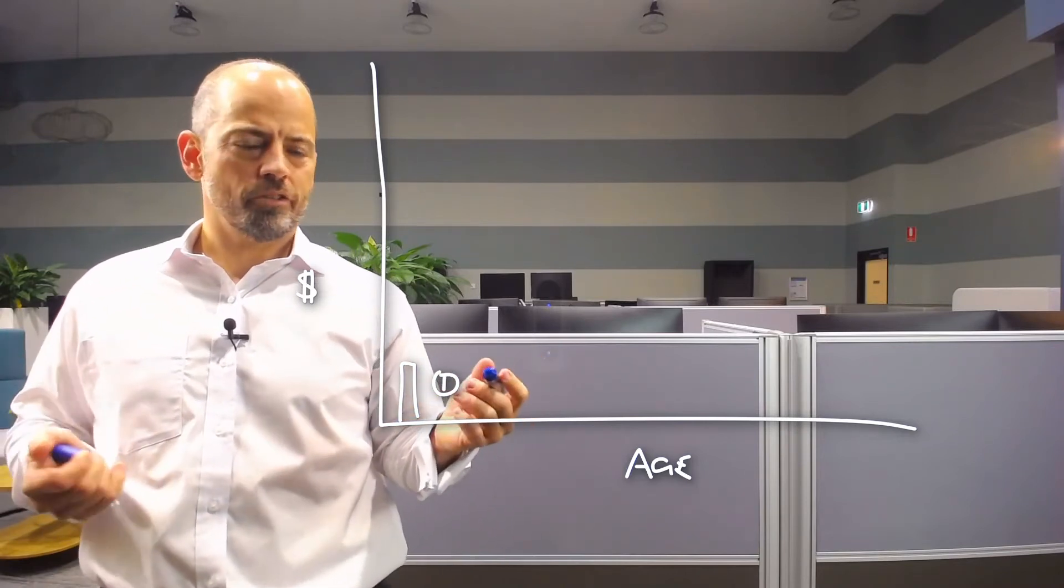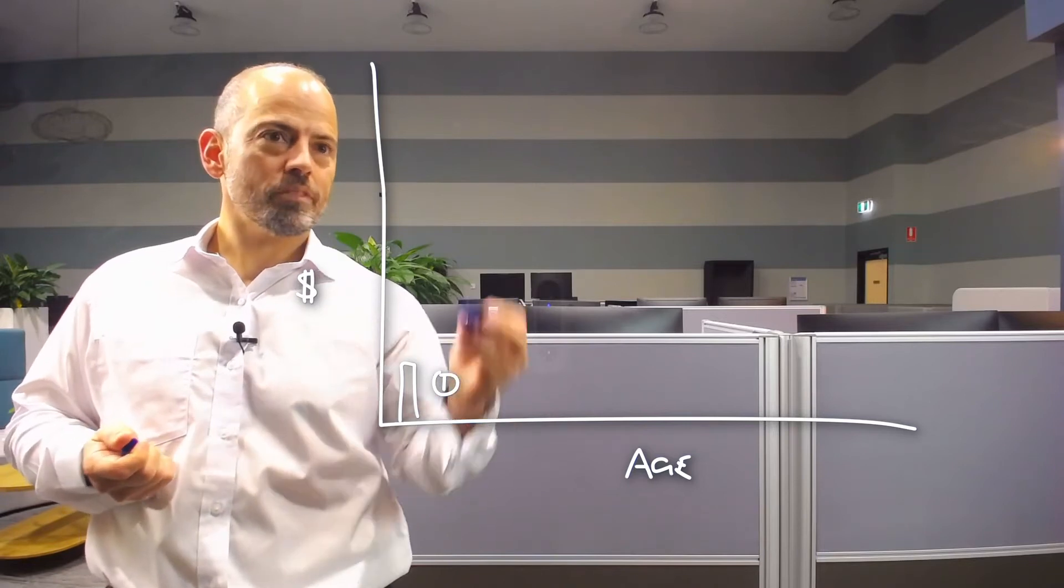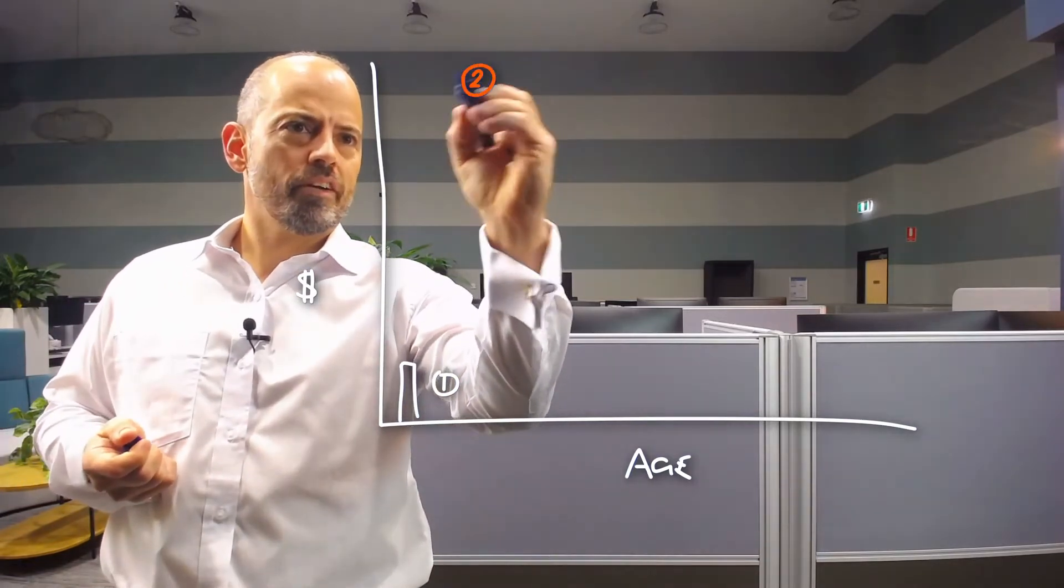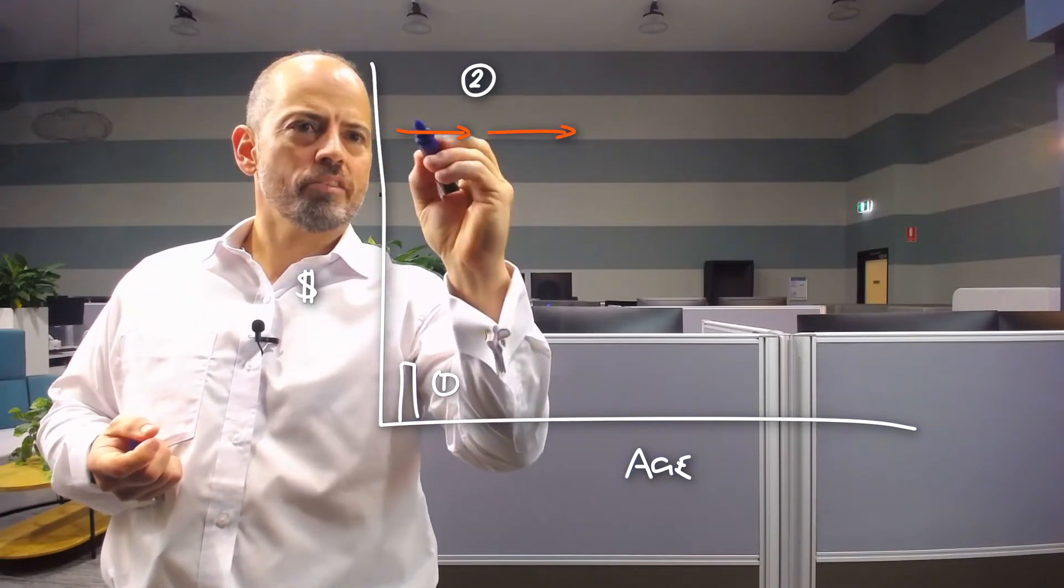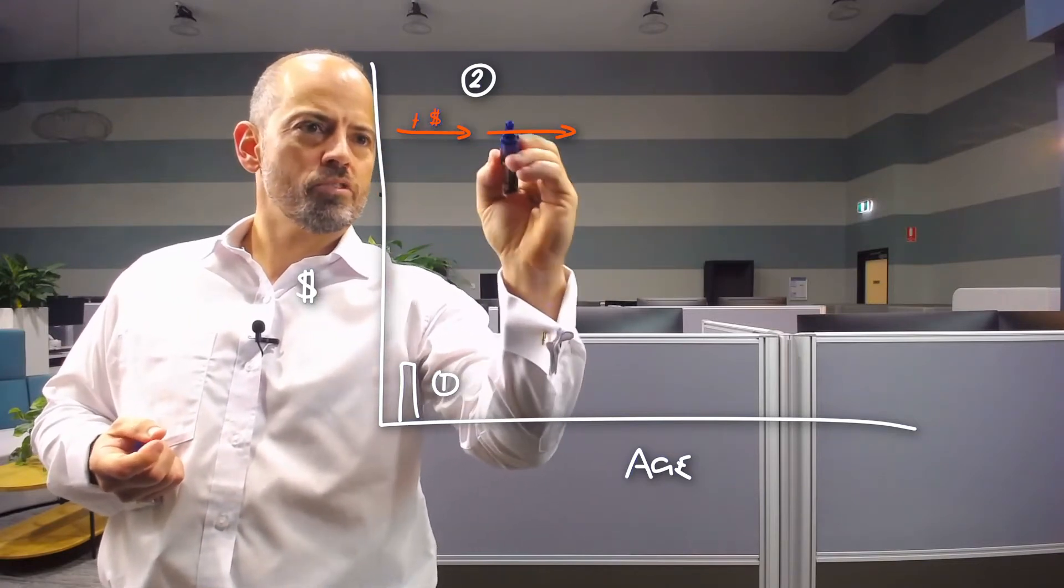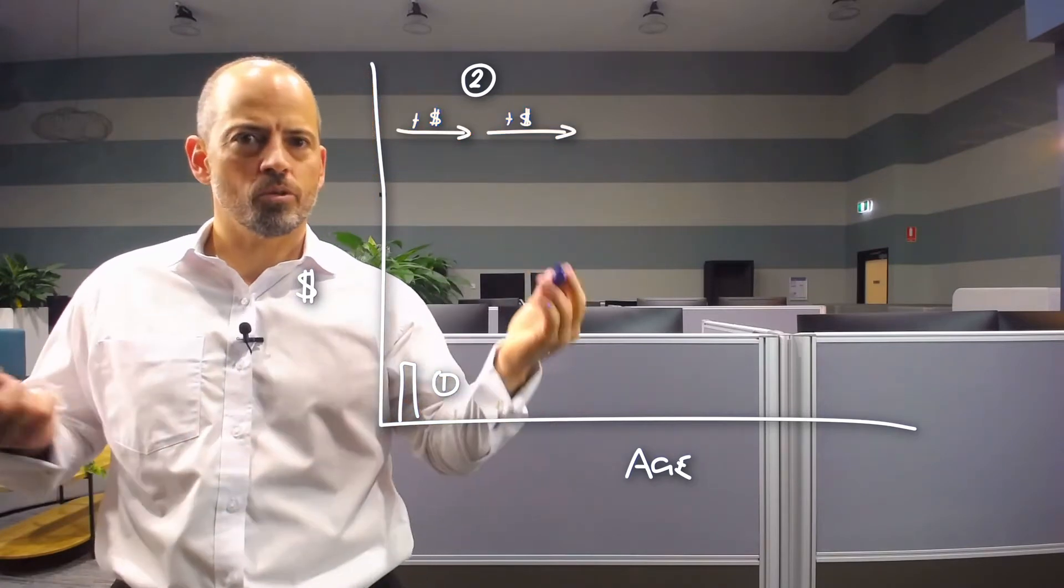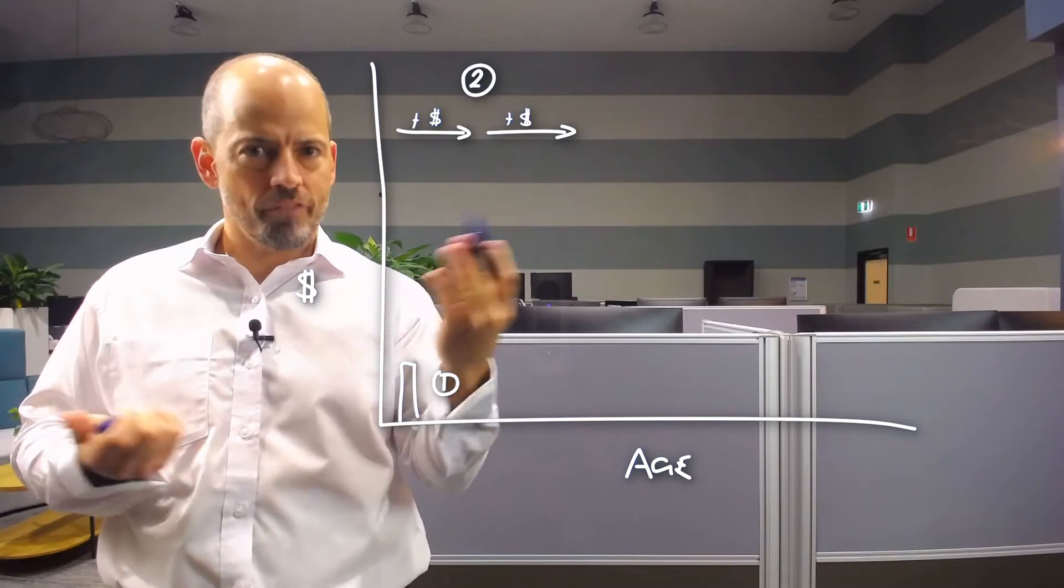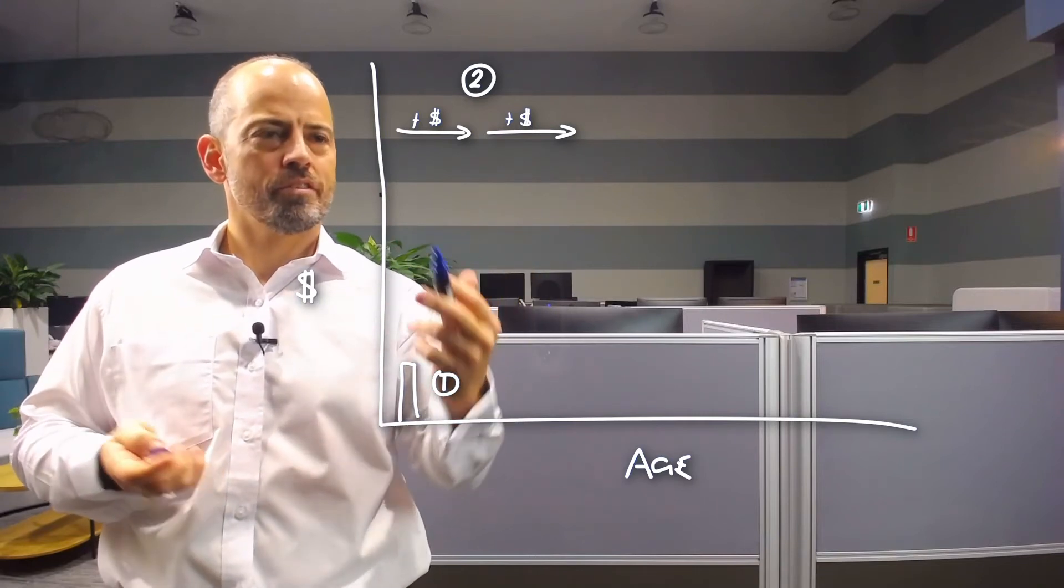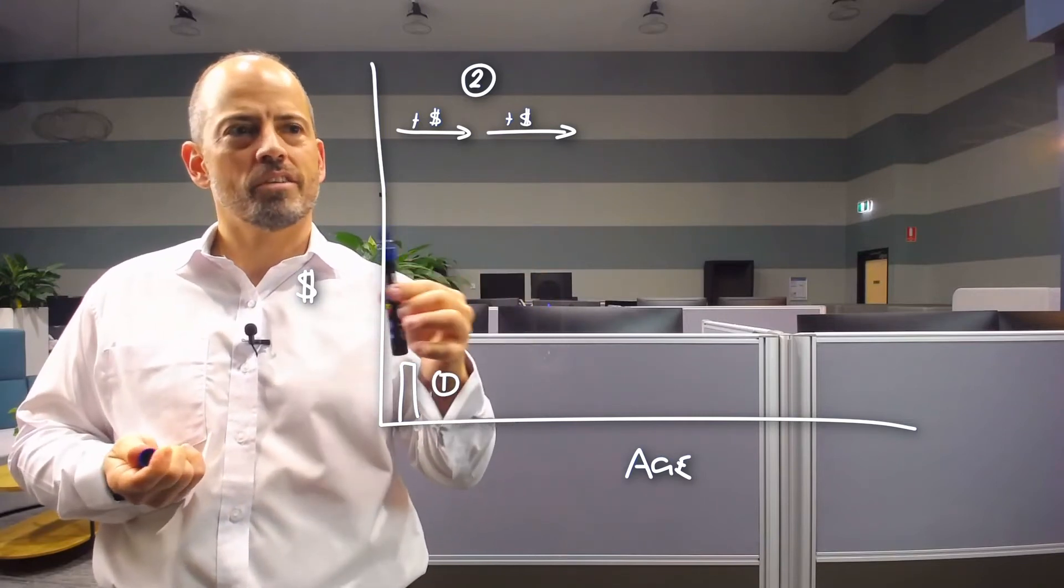Then the second variable is how much savings or surplus cash flow can you put aside each year to inject into your plan. Now it might mean that different phases of life, with family and your financial commitments, are different to others and you're able to save more in later phases in life.